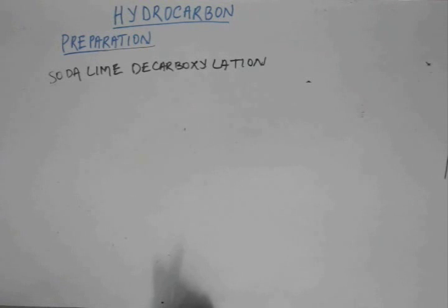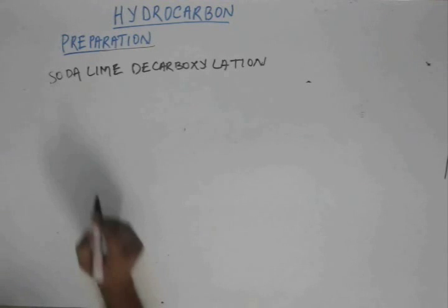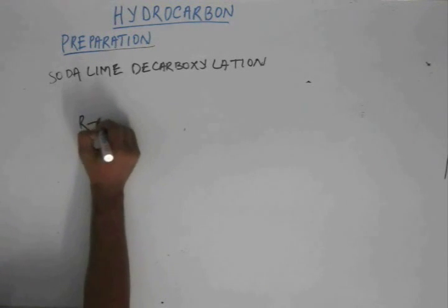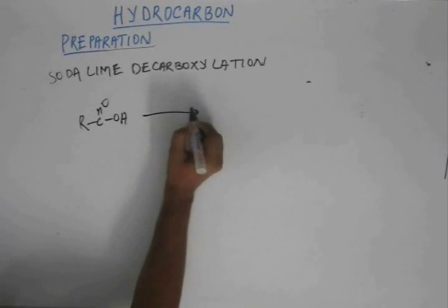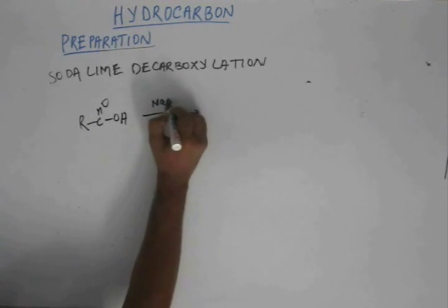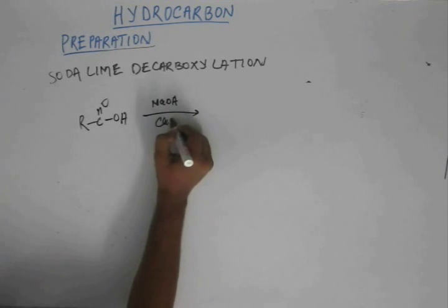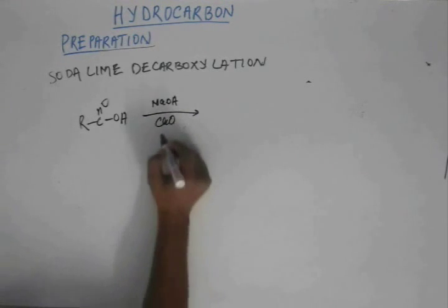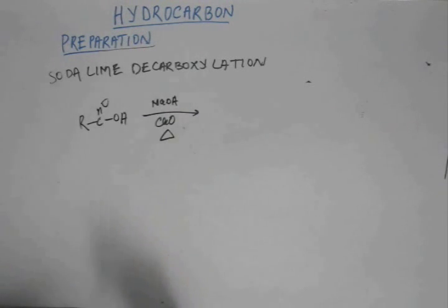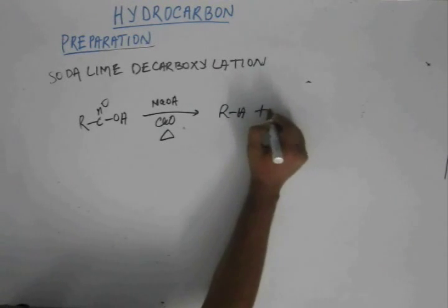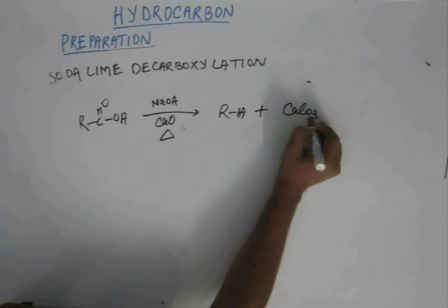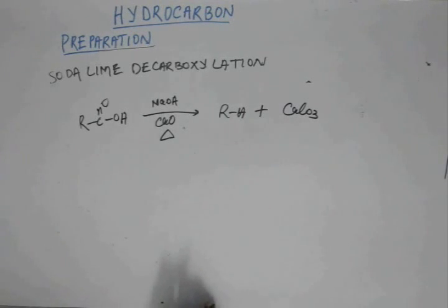Soda-lime decarboxylation is the second method of preparation of alkane that we are going to study. In soda-lime decarboxylation, we take a carboxylic acid, soda (sodium hydroxide), and lime (calcium oxide, quicklime), along with a huge amount of heat. When we do that, we end up with R-H and calcium carbonate.